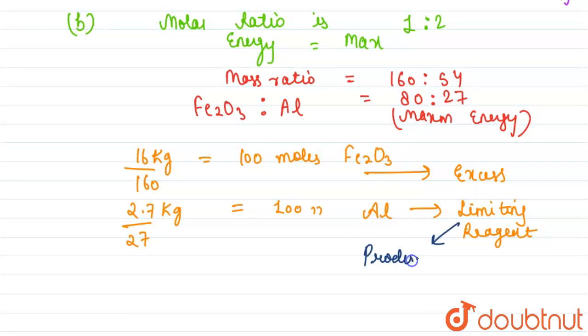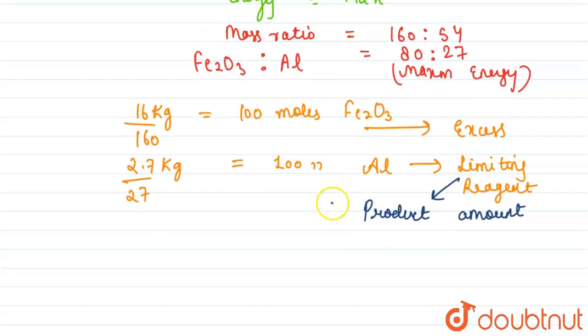It decides the product amount and decides the end point of the reaction. So we have 100 moles of aluminum, and we need to find the energy release.